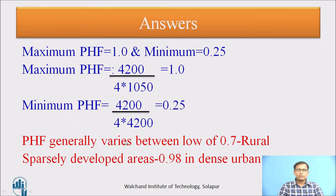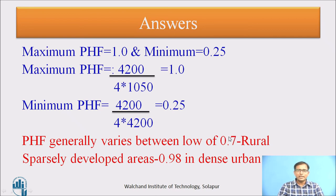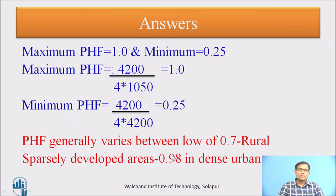Peak hour factor generally varies from 0.7 for rural sections to 0.98 for dense urban sections. Lesser values occur in rural areas because extreme congestion is rare there, whereas urban sections have a higher likelihood of congestion, requiring greater emphasis on sub-hourly traffic analysis.